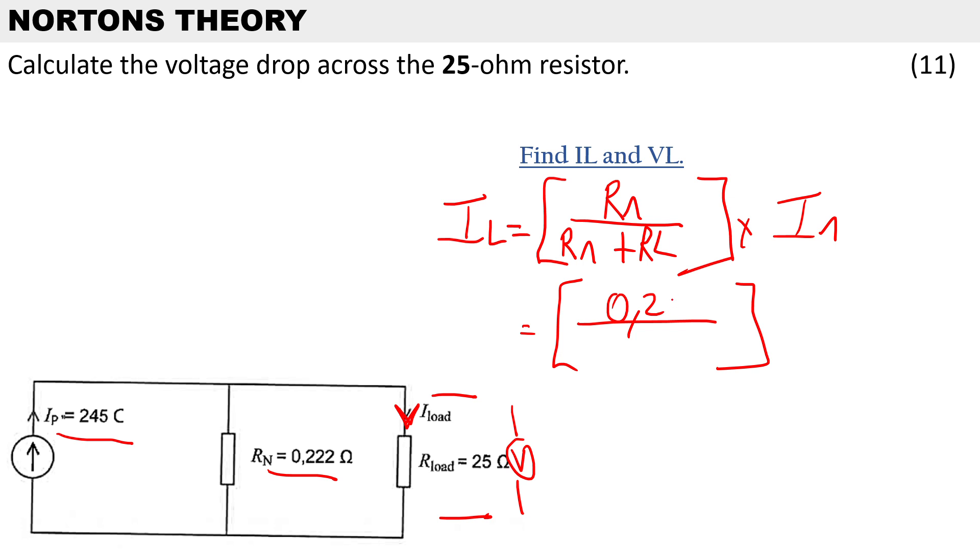This gives us our load current of 2.156 amps. Now we can actually calculate the volt drop.